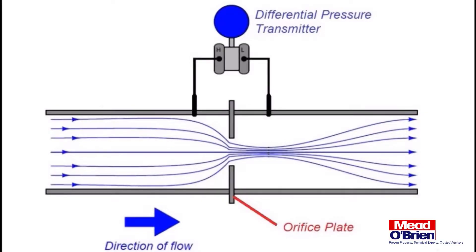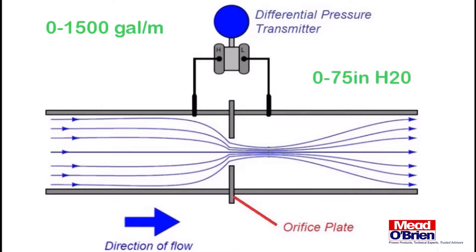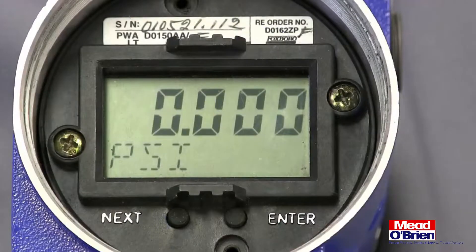Prior to configuring the transmitter, it is necessary to know the maximum flow rate you wish to measure and the differential pressure across the primary element at that flow rate. For demonstration purposes, we are going to configure our transmitter for a range of 0 to 1,500 gallons per minute at a differential pressure of 0 to 75 inches of water.